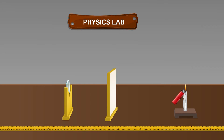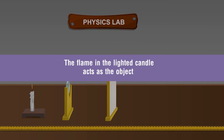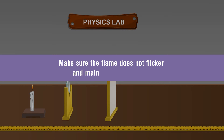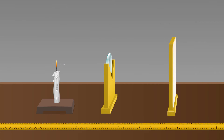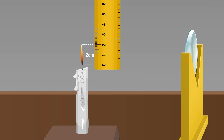Light a candle using a lighter and place it on one side of the lens — the flame will act as the object. Perform this experiment in calm air to avoid flickering; switch off the fan while performing it. Make sure the flame does not flicker and maintains its height. The optical center of the lens and the center of the candle flame should lie at the same height. Measure the height of the candle flame h using a small measuring scale — let it be 2 centimeters.